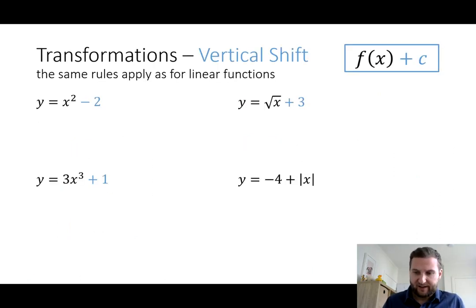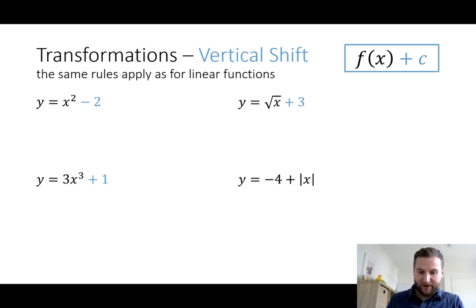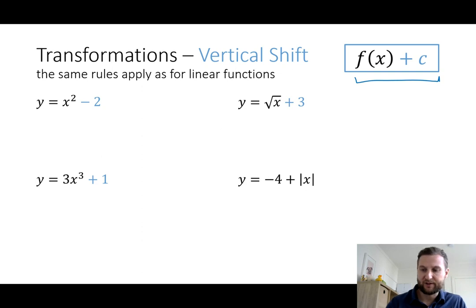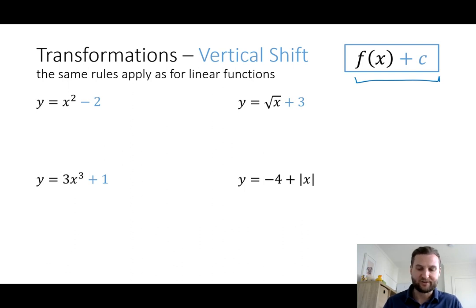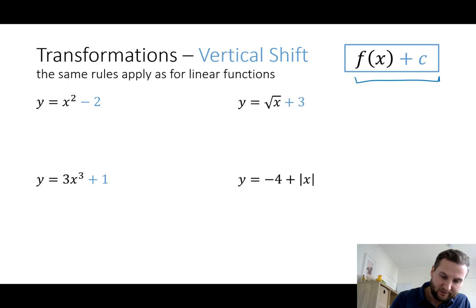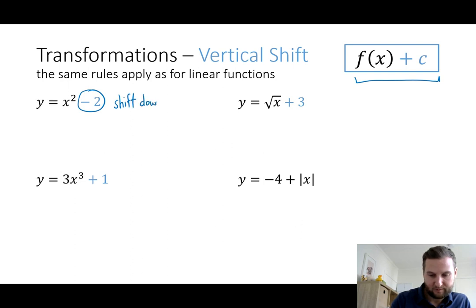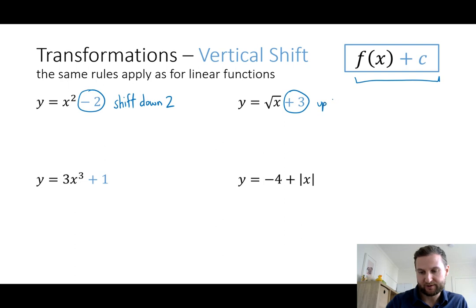The next topic is transformations. Basically what we're going to do is take a function and shift it around the graph and see how that looks from our equations perspective. For a vertical shift, the legend says f(x) plus c — we have some function to do with x, and then down the back end we add or subtract some value c. These functions aren't all linear — we'll pick up quadratics in the next session, but that's okay. My first equation says y equals x squared minus 2, so the minus 2 down the back end says I'm going to shift down by 2 units.